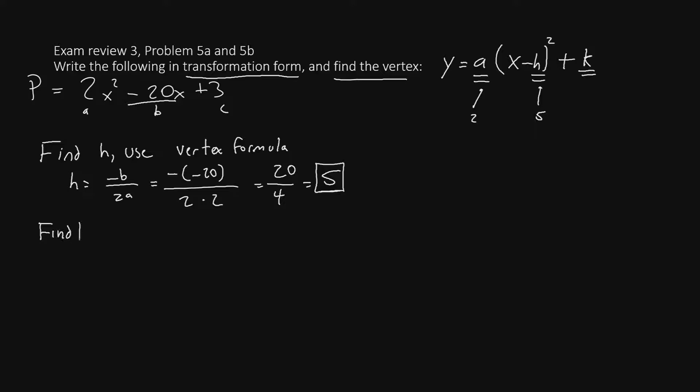Now our next mission is going to be to find k by plugging in x equals 5 into the polynomial. So in this polynomial we'll say k equals 2 times 5 squared minus 20 times 5 plus 3. So let's do the math. 5 squared is 25 so we'll have 2 times 25. 20 times 5 is 100 plus 3. If we simplify a little bit further we'll have 2 times 25 is 50 minus 100 plus 3. This will give us negative 47. So the k is negative 47.